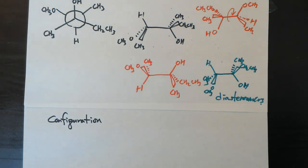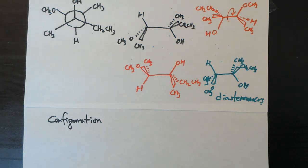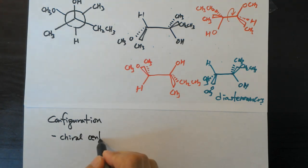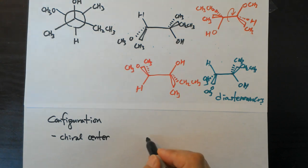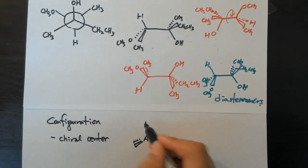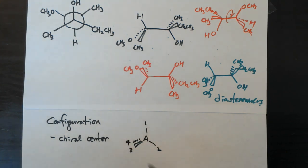The change involved in switching groups on a carbon is called configuration change, as opposed to conformation change, which involves rotating a single bond. Just as conformations are named (gauche, anti, chair, boat), we also give names to configurations. To do that, we first need to learn about the chiral center. A chiral center is a central atom — not always carbon — that holds four different substituents. When a carbon holds four different groups, we call it a chiral center.